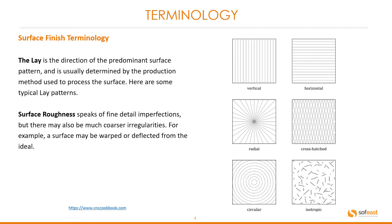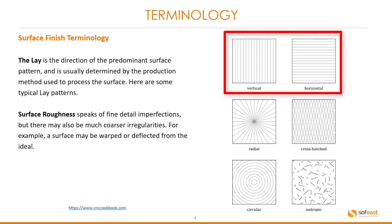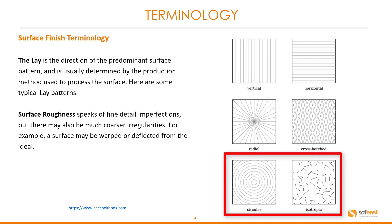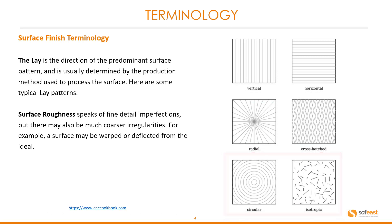Continuing on with some of the terminology, let's have a look at lay in more detail. The lay is the direction of the predominant surface pattern and is usually determined by the production method used to produce the surface. Here are some typical lay patterns: at the top, vertical and horizontal; in the center, radial and crosshatched; and at the bottom, circular and isotropic.